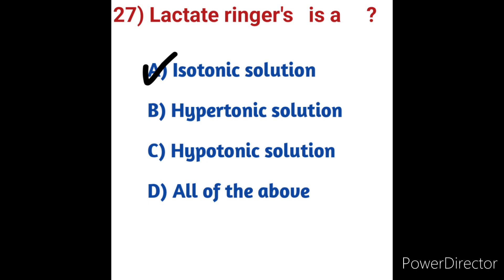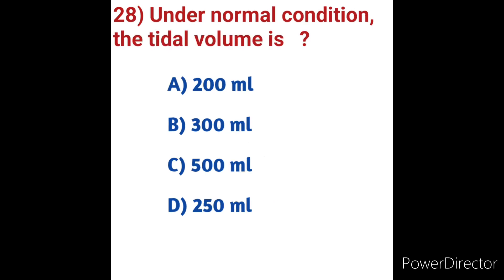Question number twenty-eight: Under normal conditions, the tidal volume is? Options: A) 200 mL, B) 300 mL, C) 500 mL, D) 250 mL. Tidal volume is the amount of air moved through the lungs each time you inhale and exhale while at rest. It is typically measured at around 500 mL for males and 400 mL for females. Based on Boyle's Law, once pressure equalizes, the tidal volume of approximately 500 mL is delivered. Option C, 500 mL, is the correct answer.